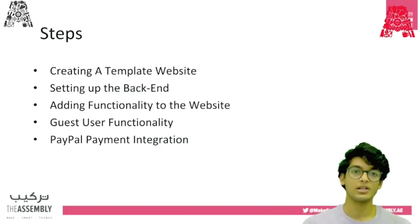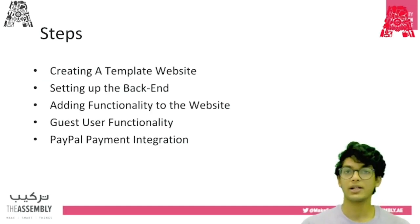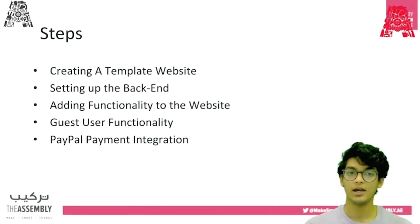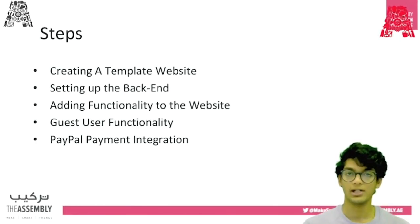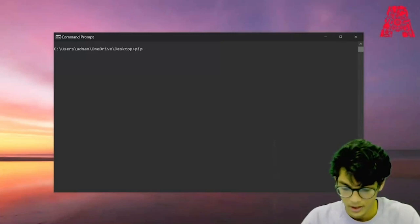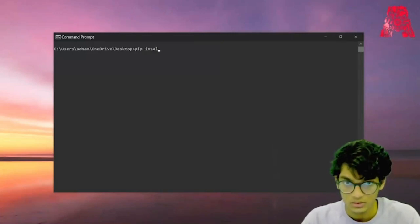And now on to the steps. First we'll create a template website, then set up the backend, add functionality, then add guest user functionality, and finally we'll integrate the PayPal API. The first step would be to install Django — you can do that by running the command: pip install Django.